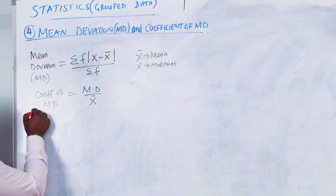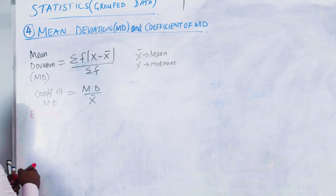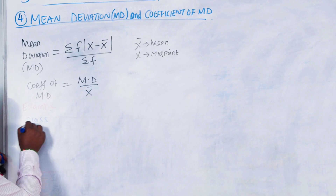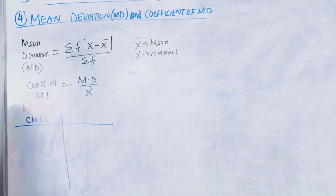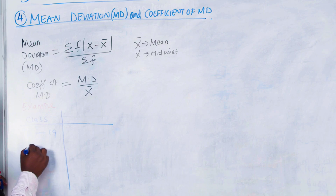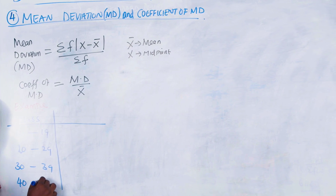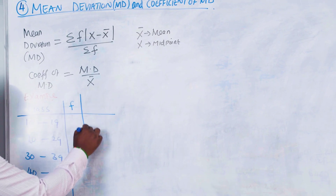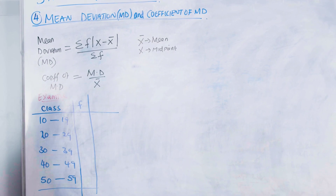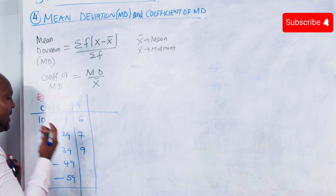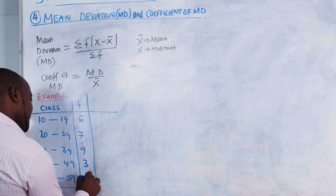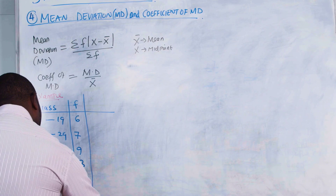We are creating a simple example. We have class intervals: 10 to 19, 20 to 29, 30 to 39, 40 to 49, and 50 to 59. The frequencies for these classes are 6, 7, 9, 3, and 5 respectively — the same example used to calculate our mean — so you can see how we get the mean deviation.